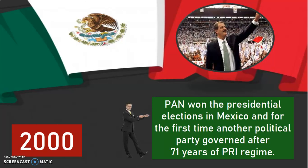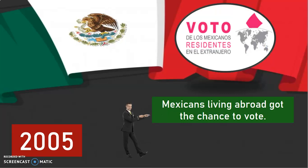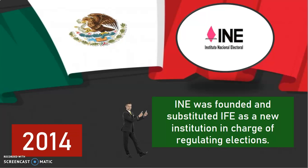In the year 2005, Mexicans living abroad — that means Mexicans living in other countries — got the chance to vote. In the year 2014, INE was founded and substituted IFE as the new institution in charge of regulating elections.